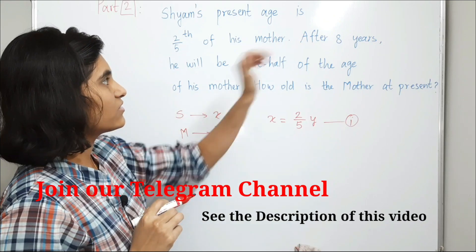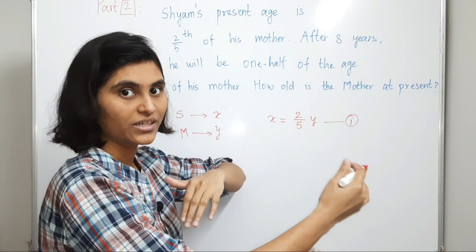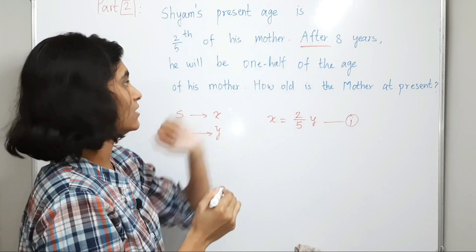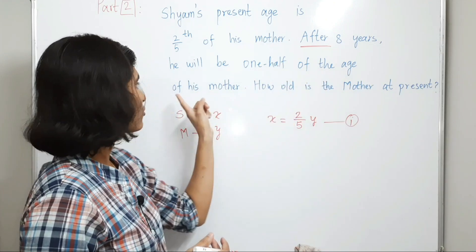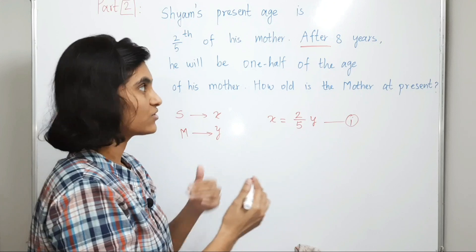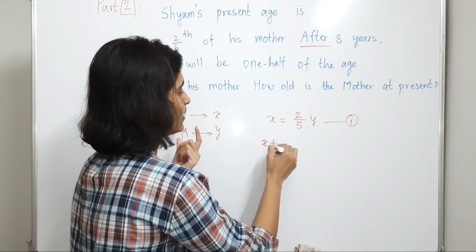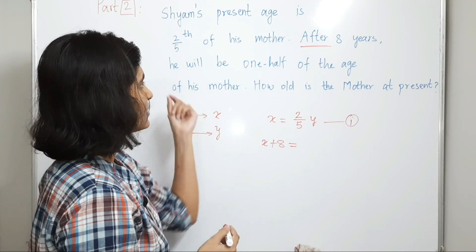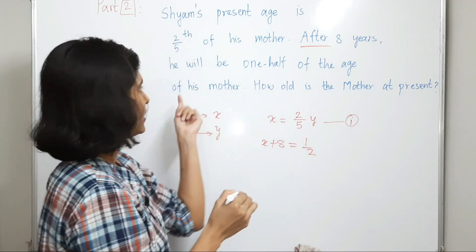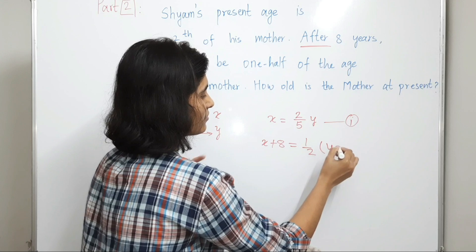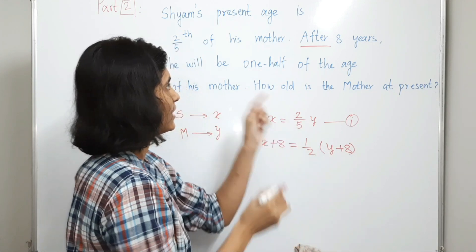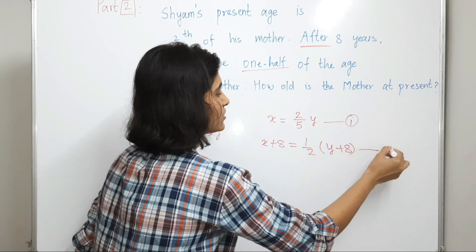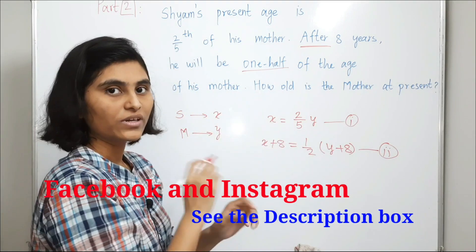The second condition is after 8 years — that means something in the future, so we add 8. He will be one-half of the age of his mother. After 8 years, Shams' age will be X + 8, and this equals one-half of the mother's age after 8 years, which is (1/2)(Y + 8).